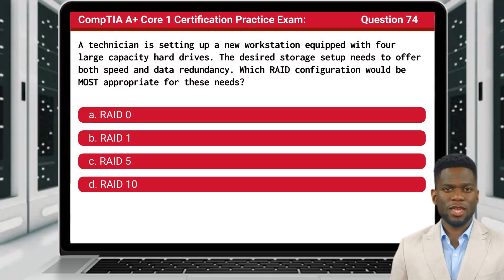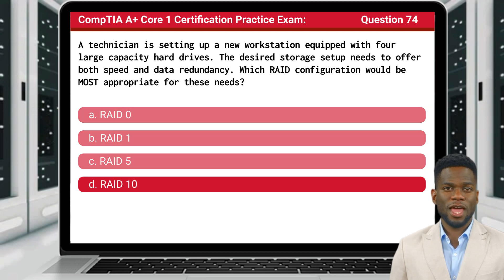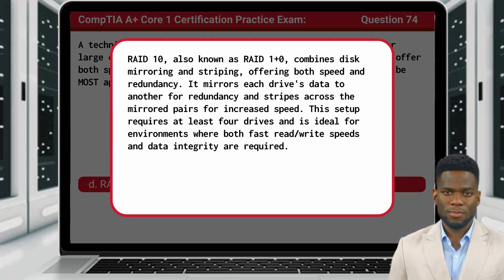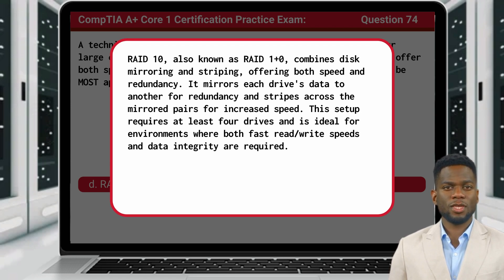Question 74. A technician is setting up a new workstation equipped with four large-capacity hard drives. The desired storage setup needs to offer both speed and data redundancy. Which RAID configuration would be most appropriate for these needs? The answer is D: RAID 10. RAID 10, also known as RAID 1+0, combines disk mirroring and striping, offering both speed and redundancy. It mirrors each drive's data to another for redundancy and stripes across the mirrored pairs for increased speed. This setup requires at least four drives and is ideal for environments where both fast read/write speeds and data integrity are required.